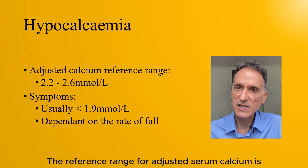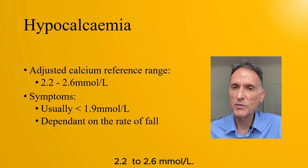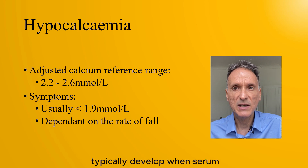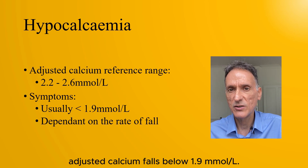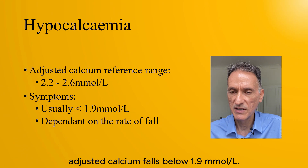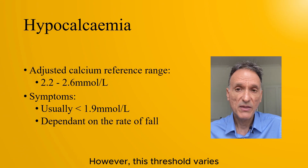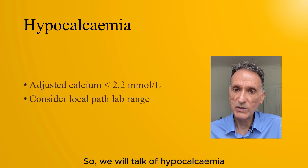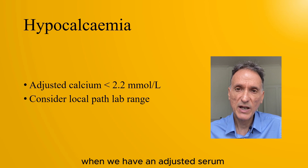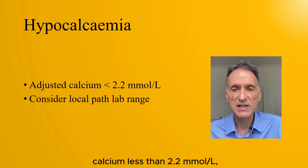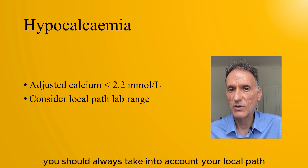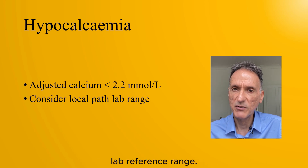The reference range for adjusted serum calcium is 2.2 to 2.6. Symptoms of hypocalcemia typically develop when serum-adjusted calcium falls below 1.9. However, this threshold varies and symptoms also depend on the rate of fall. We will talk of hypocalcemia when we have an adjusted serum calcium less than 2.2, although you should always take into account your local path lab reference range.